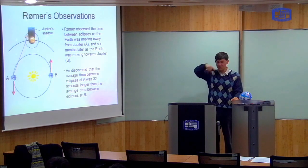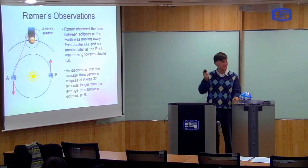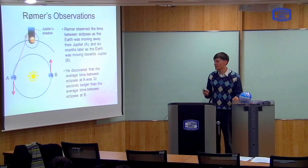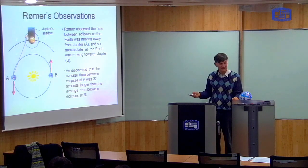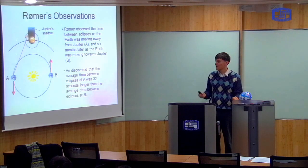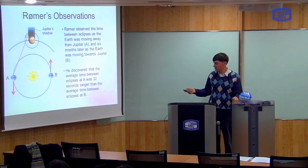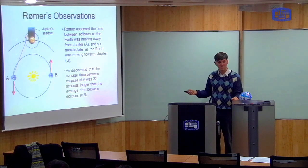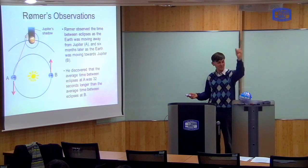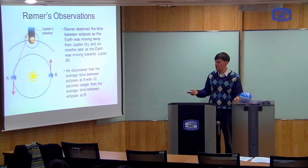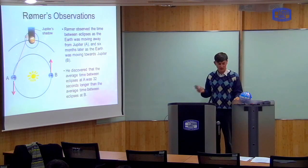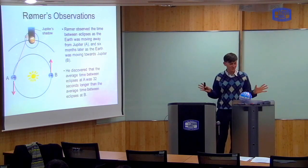Okay? So, Rømer observed this eclipse happen many times. And he noticed something interesting. He noticed that when the Earth was moving away from Jupiter here, like at A, and when the Earth was moving towards Jupiter, like at B, the time between eclipses was different. Okay? And it was different by about 32 seconds. The time between eclipses was 32 seconds longer at A than it was at B. Okay? So that was the observation.